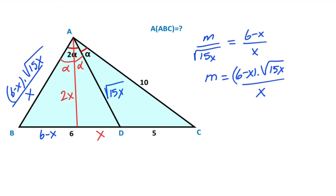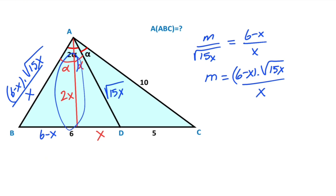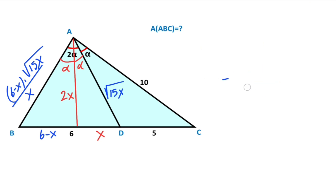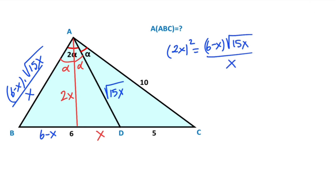If you focus on triangle ABD and use the formula for the angle bisector length, we can find x. Applying the formula: (2x)² equals (6 − x) · √(15x) / x · √(15x) minus (6 − x) · x, which gives 4x² equals (6 − x) · 15x/x minus (6 − x) · x.